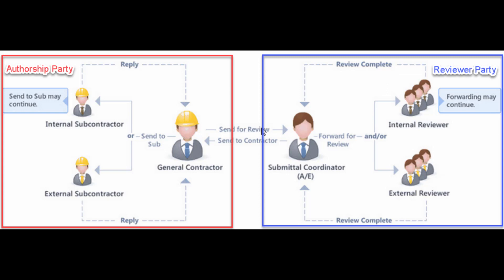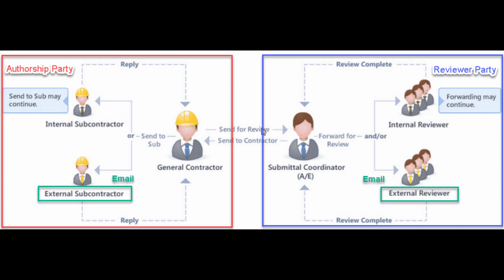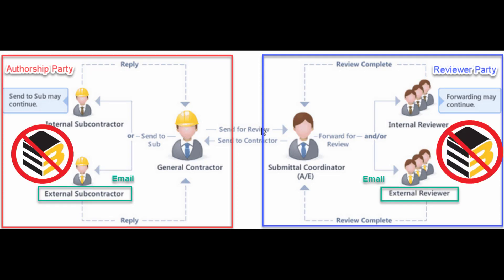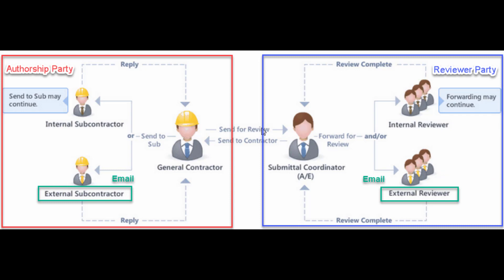If for whatever reason you are not using your internal project management system in your office to engage your SOPs into this process, you can use e-Builder for that purpose. You can simply send the submittal items to your SOPs through e-Builder via email. They do not need to have an e-Builder license or account — that's why e-Builder calls those users external users — but they can participate by email.